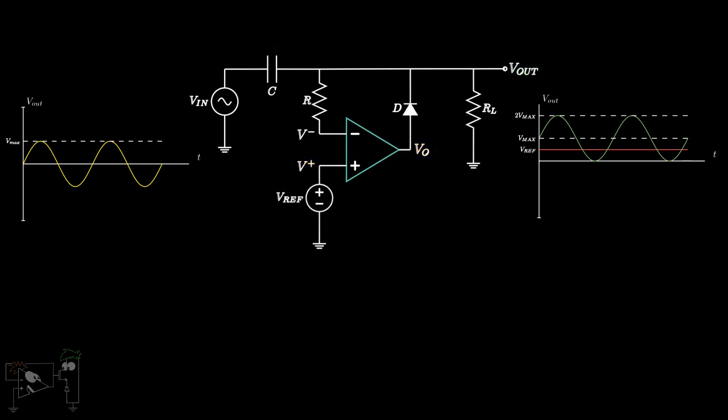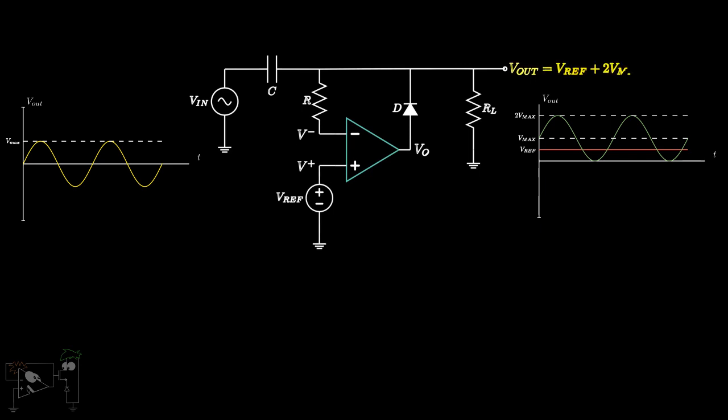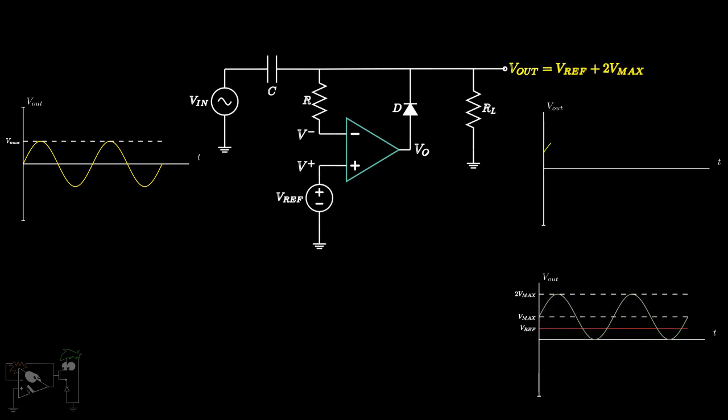Thus, the net output in steady state is Vref plus 2Vmax. Hence, as the output is clamped to a positive voltage level, this is a positive clamper.